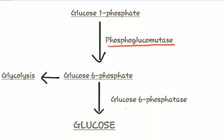But in the liver, glucose 6-phosphate, in the presence of the enzyme glucose 6-phosphatase, gets converted into glucose.